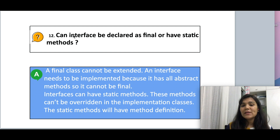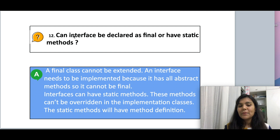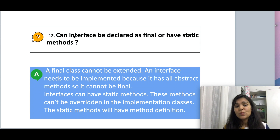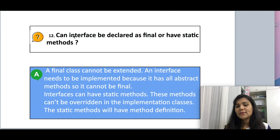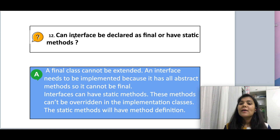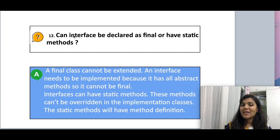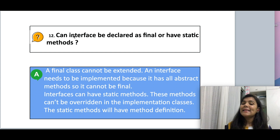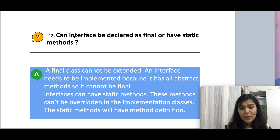Next question: can an interface be declared as final or have static methods? A final class cannot be extended, and an interface has all abstract methods that must be implemented by subclasses — so an interface can never be final. Interfaces can have static methods; this has been included since JDK 8, which allows adding default and static methods to interfaces. The condition is that static methods must have implementations and cannot be overridden by subclasses, since we don't want subclasses changing the behavior of static methods.